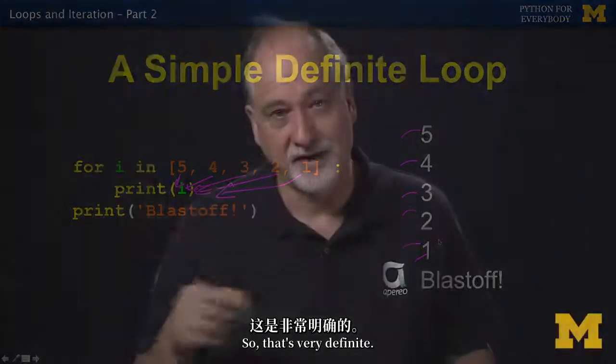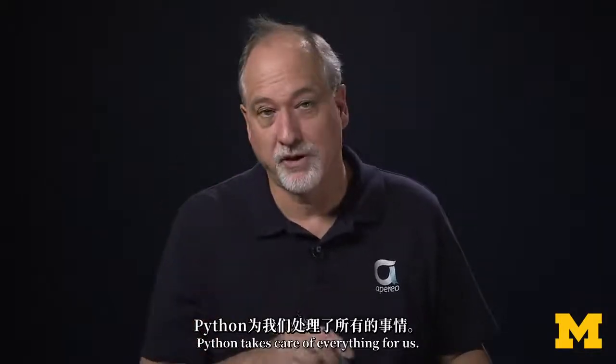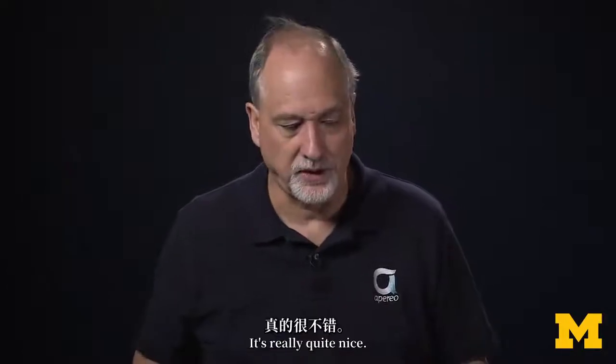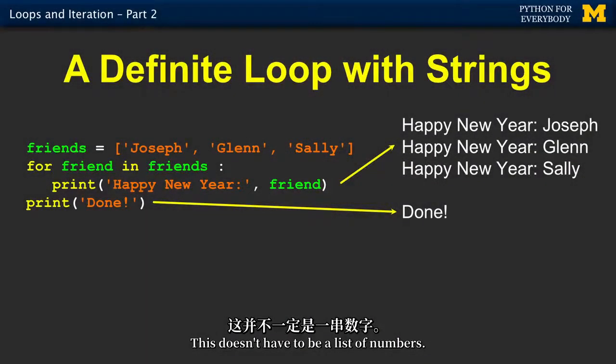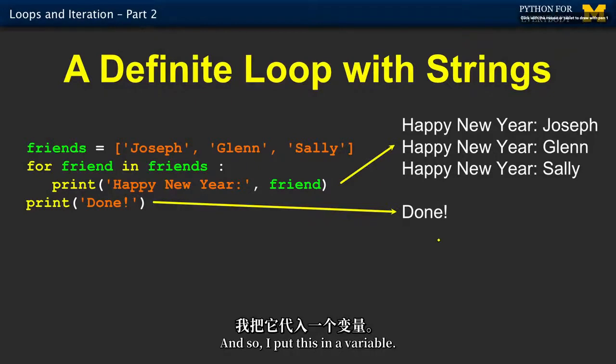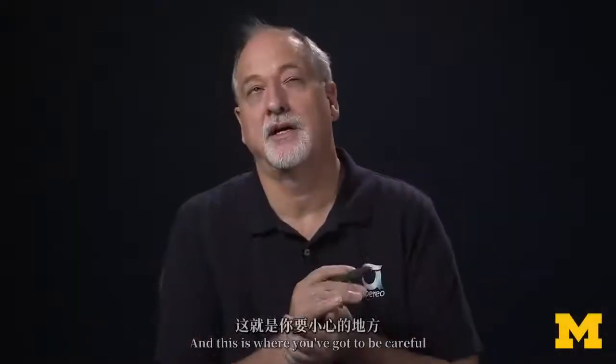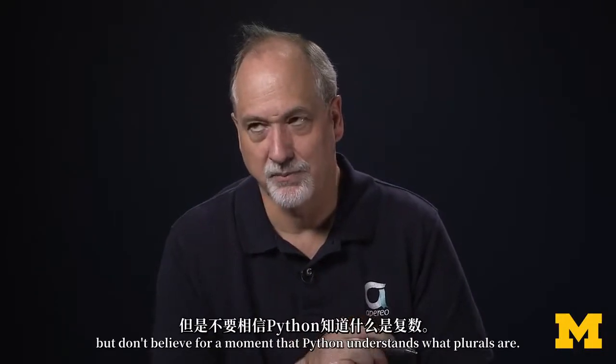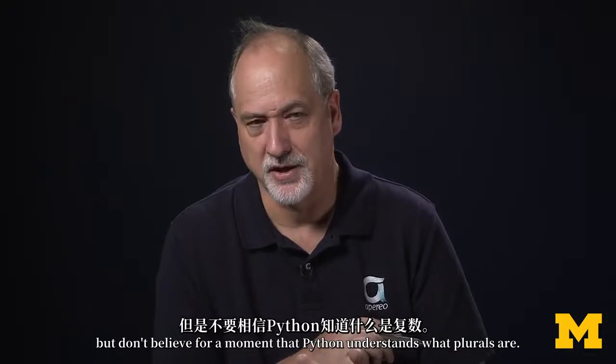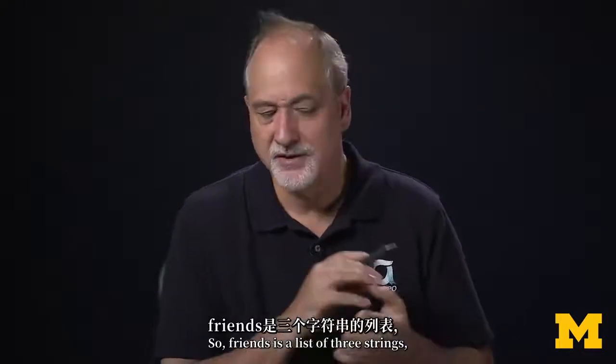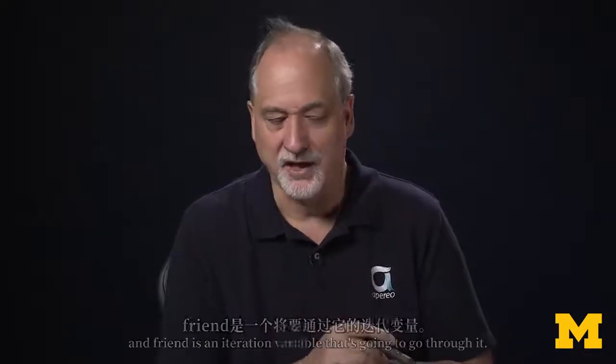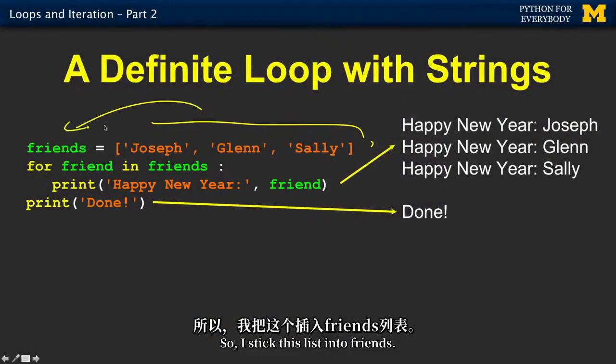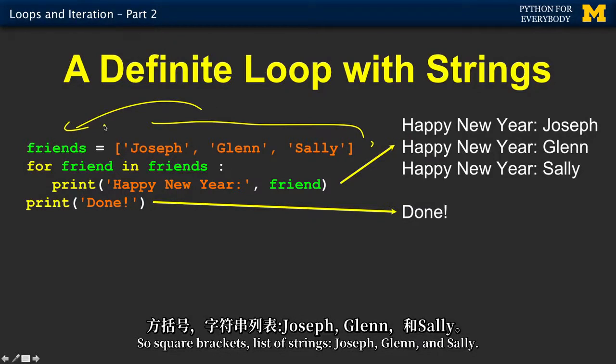That's very definite, Python takes care of everything for us, we don't have to have a logical condition to stop, or anything like that, it's really quite nice. This doesn't have to be a list of numbers, this is a list of strings. So I put this in a variable, and this is where you got to be careful because I named it friend and friends, which makes perfect sense, but don't believe for a moment that Python understands what plurals are. So friends is a list of three strings, and friend is an iteration variable that's going to go through it. I stick this list into friends, so square brackets, list of strings, Joseph, Glenn, and Sally.